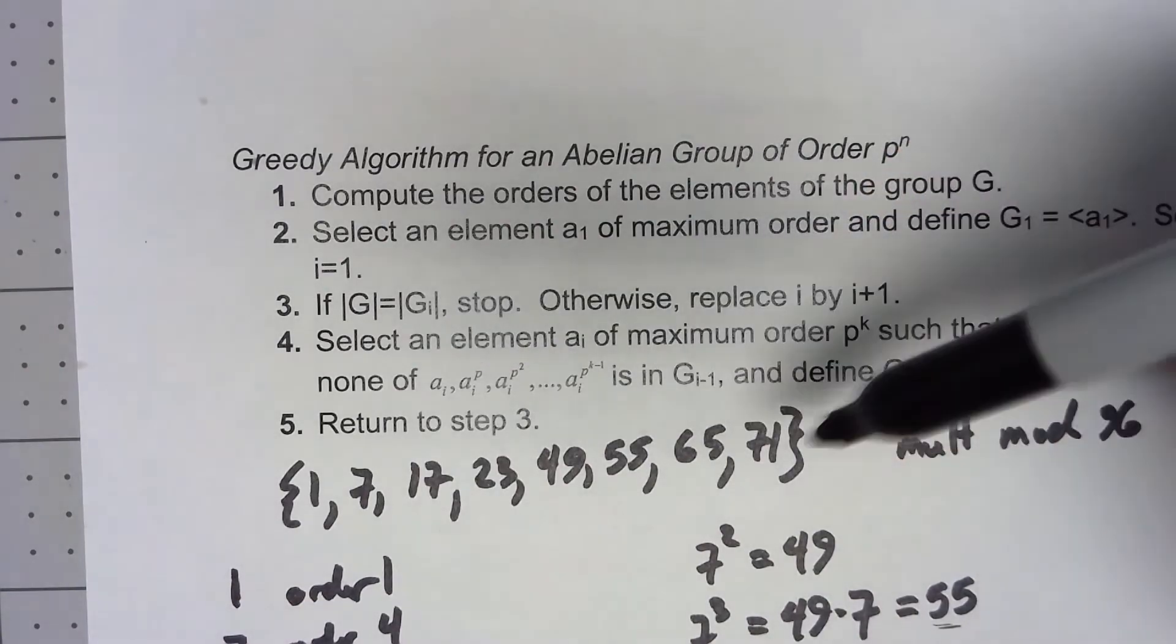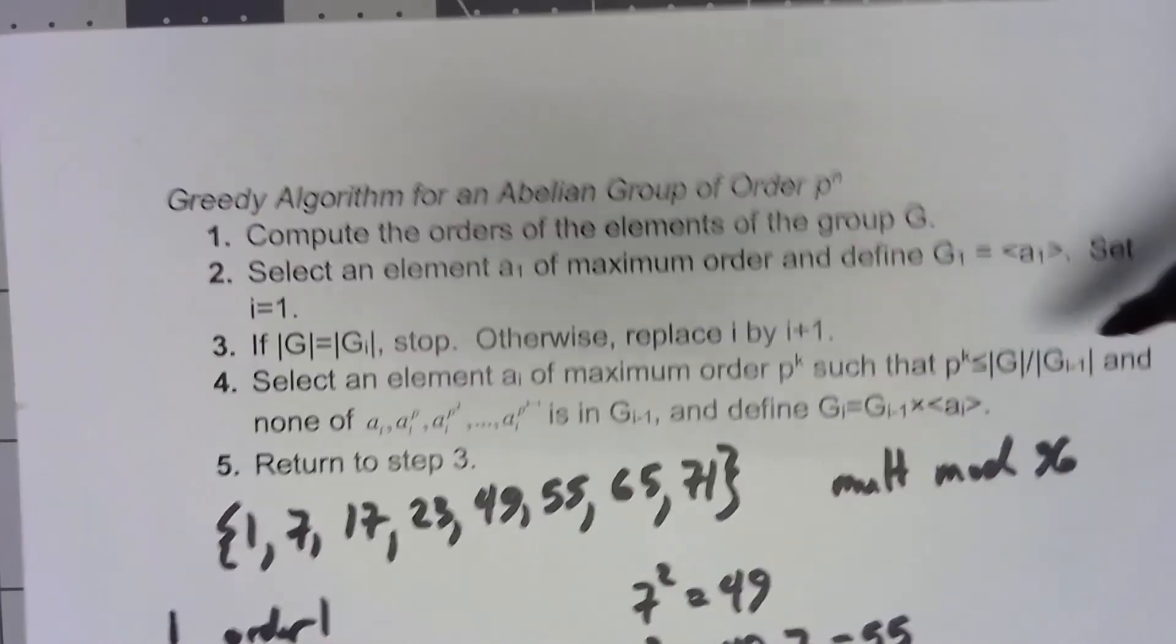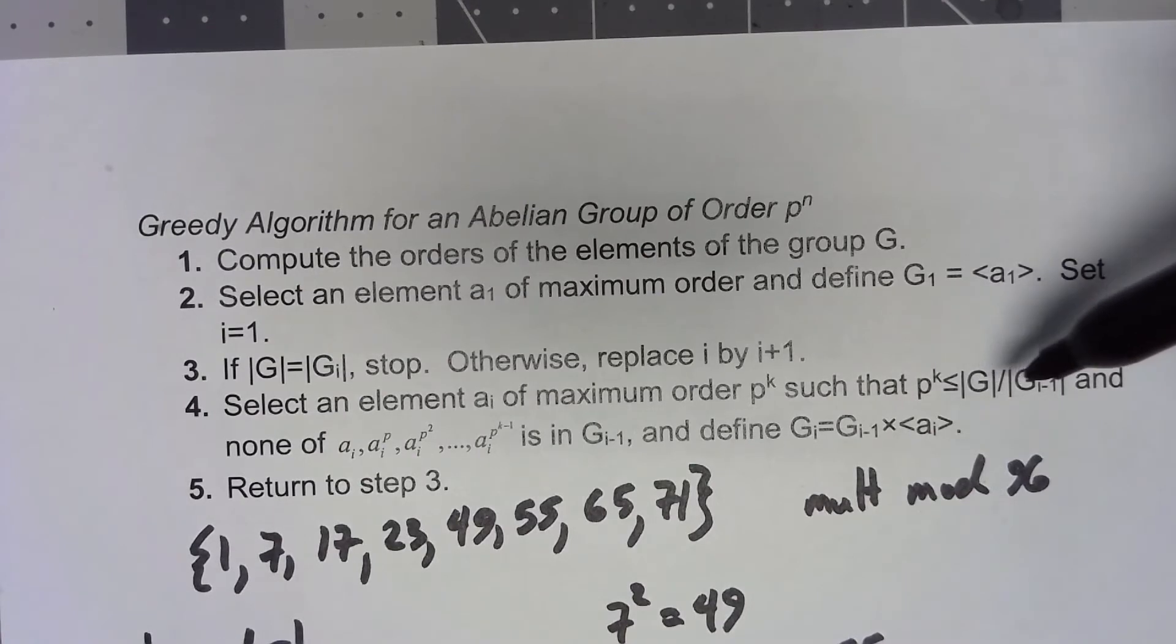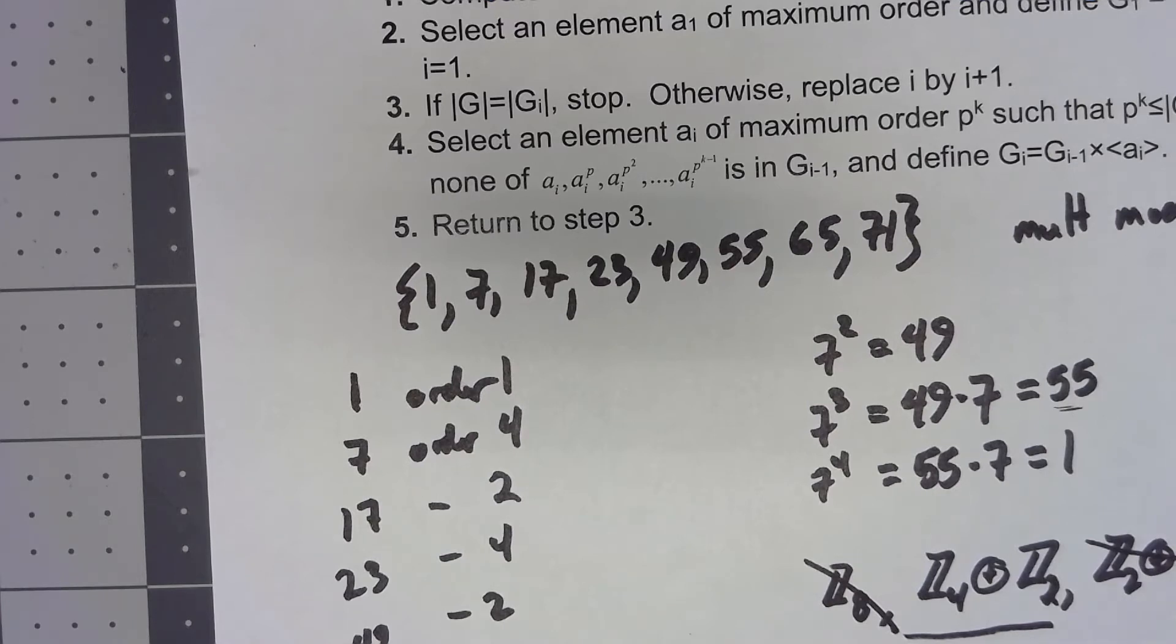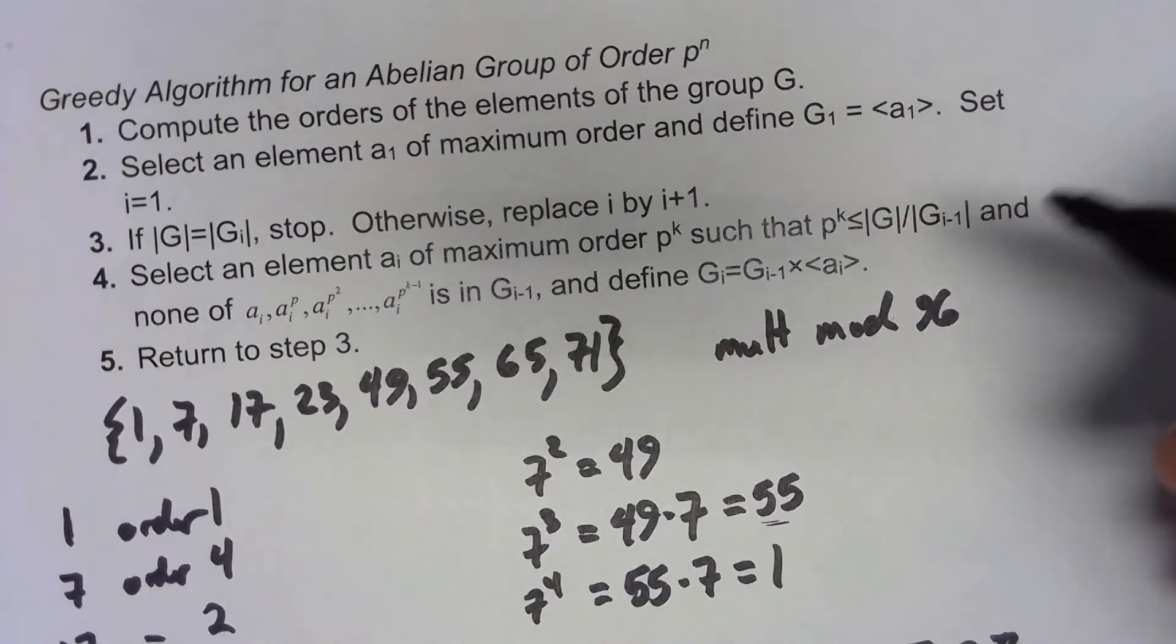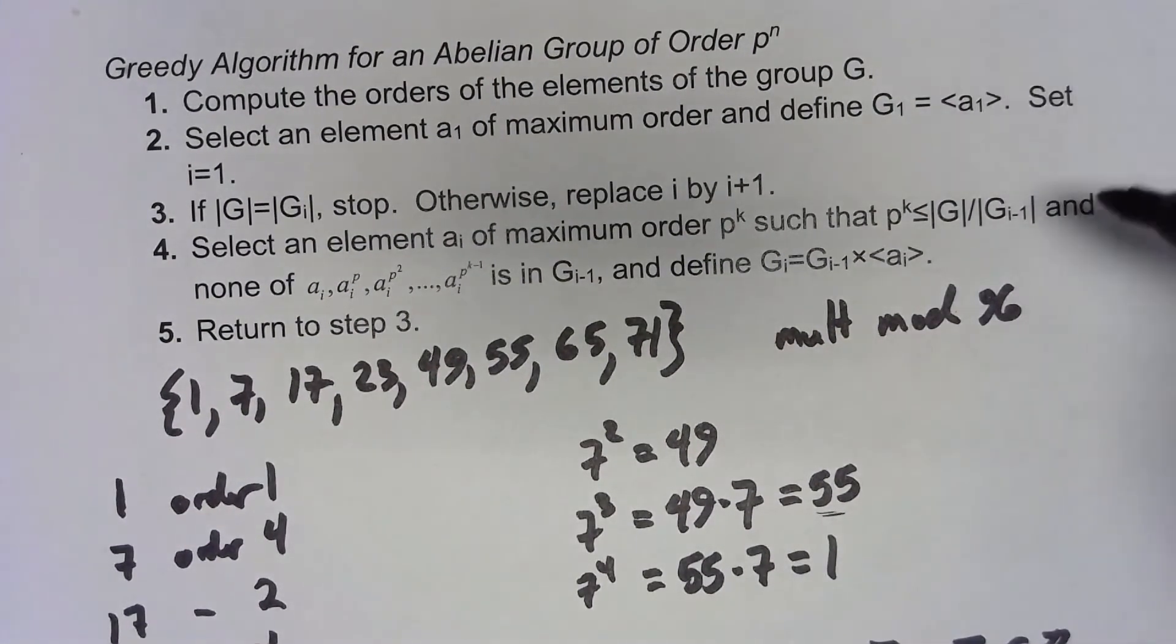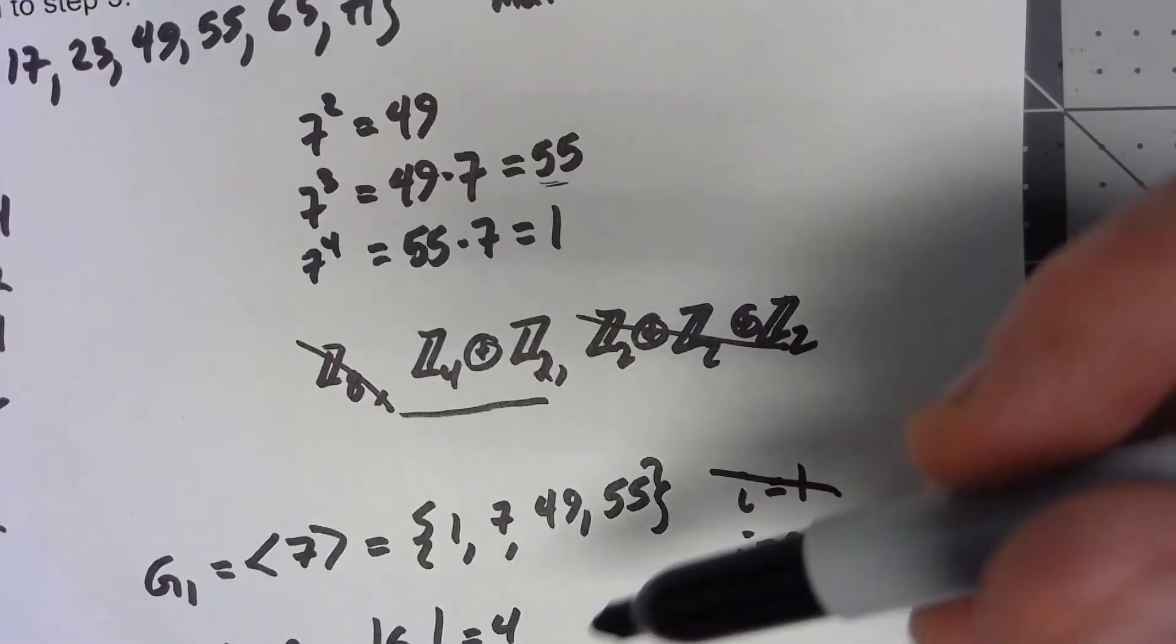And now this is probably the most confusing part. I select an element a_i of maximum order such that p to the k is less than or equal to the order of G over the order of G minus 1. So the order of G was 8. The order of G1 is 4. So I need to find an element of order 2, of order 8 divided by 4, an element of order 2. But more than that, it needs to be that no power of that is in my previous group that I've constructed.